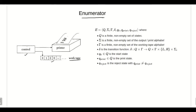Formally, we can define an enumerator as a seven-tuple. Q is a finite set of states. Sigma is a finite non-empty set of output or print alphabet — it is called the output alphabet. Note that in all the machines studied so far, sigma is used as input alphabet, but here sigma is the output alphabet. Tau is a finite non-empty set of symbols in the work tape.